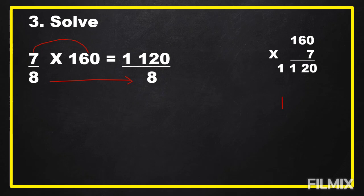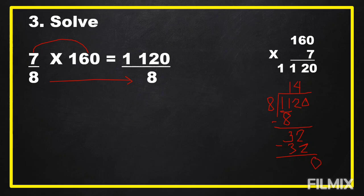Now we are going to divide 1120 by 8. 1 divided by 8 cannot be done, so take 2 digits. 11 divided by 8 is equal to 1. 1 times 8 is equal to 8. 11 minus 8 is equal to 3. Bring down 2. 32 divided by 8 is 4. 4 times 8 is equal to 32. 32 minus 32 is 0. Bring down 0. 0 divided by 8 is 0. 0 times 8 is 0. We don't have a remainder.